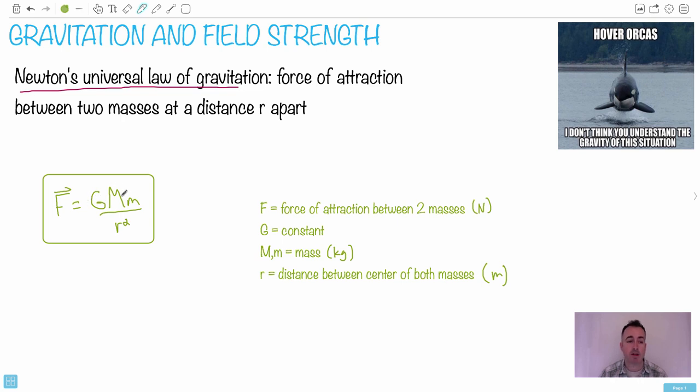You can see that the gravitational force between two objects depends directly on the masses. It depends inversely proportional to the square of the distance. If your distance increased by two, two squared is four, that means the force would go down by four. It's an inverse square law, we call it.